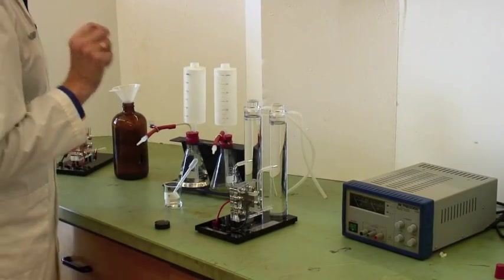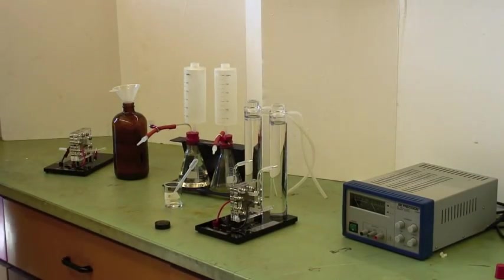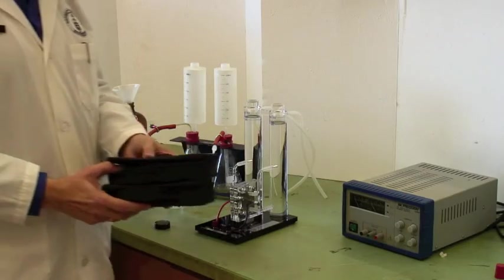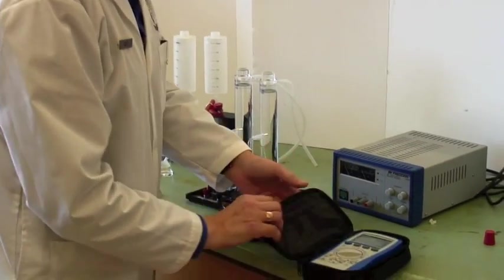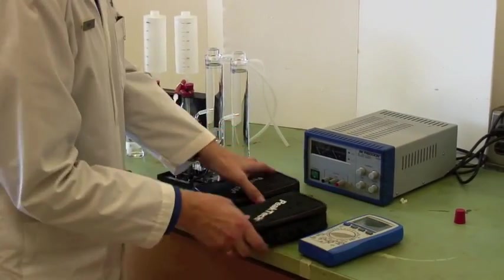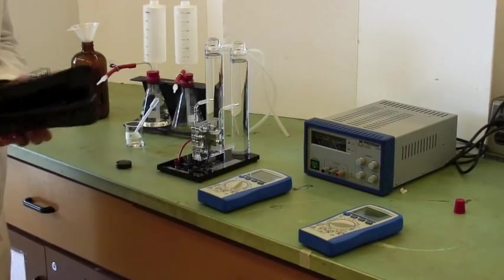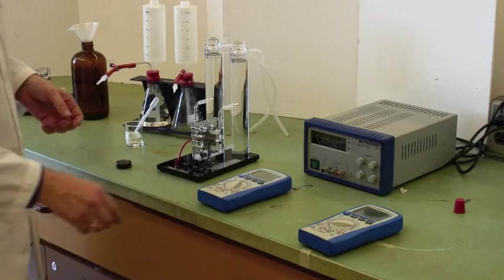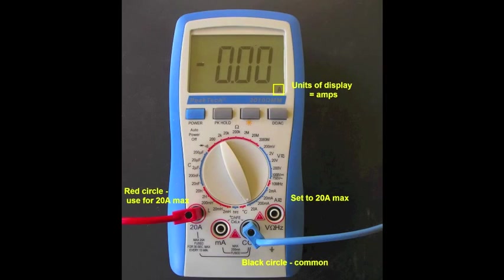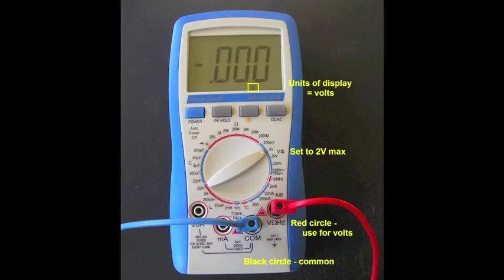To test these you will need two multimeters. Now these are actually identical. Both of them work as both voltmeters and ammeters. Just use one for each. This one is set to 20 amps so I use that as an ammeter and you'll notice that on the front it says A for amps. The other one when I turn it on has a V for volts ready for it.